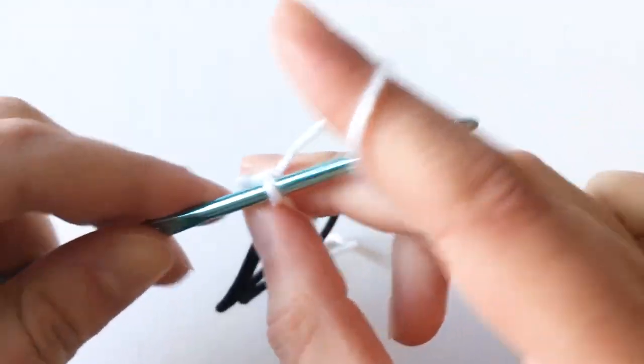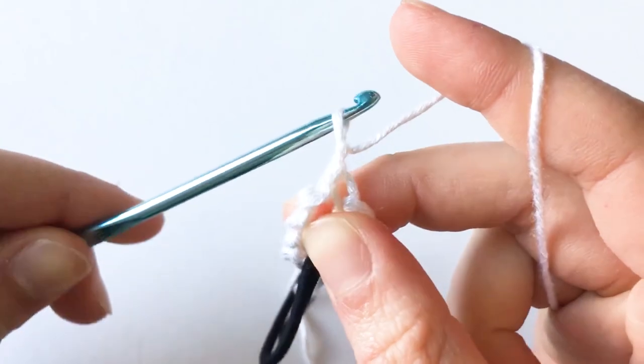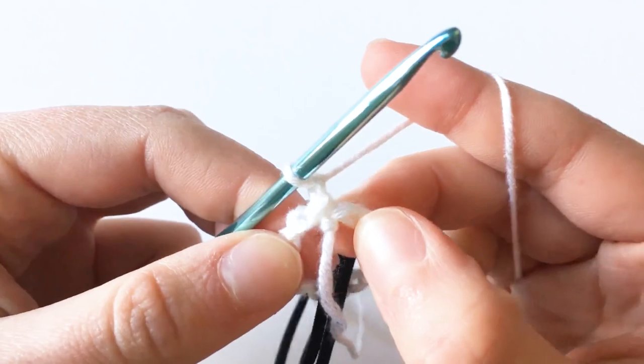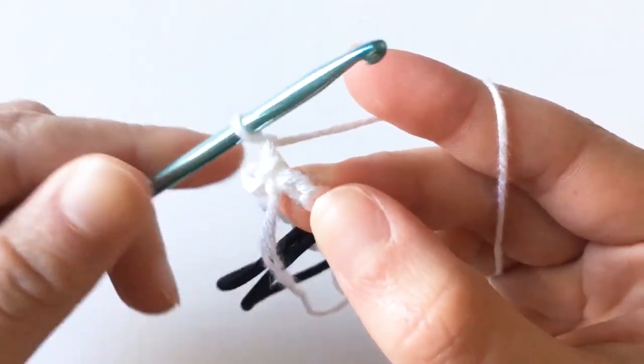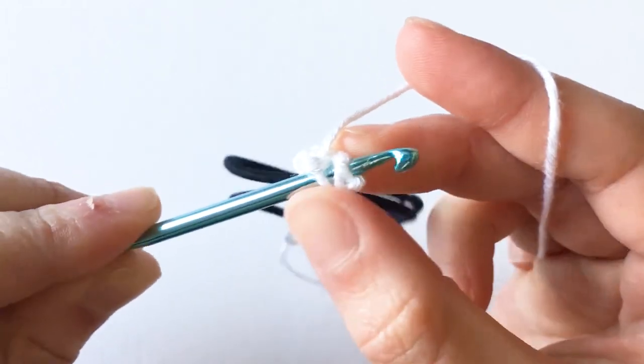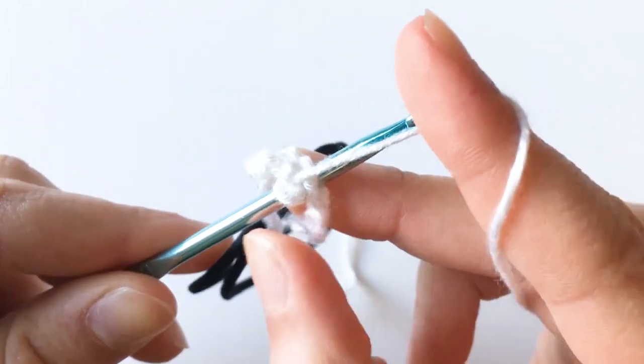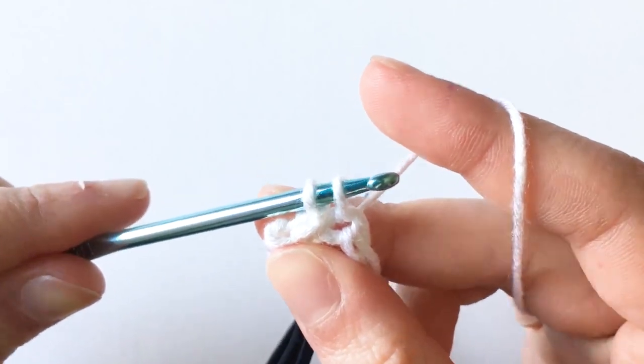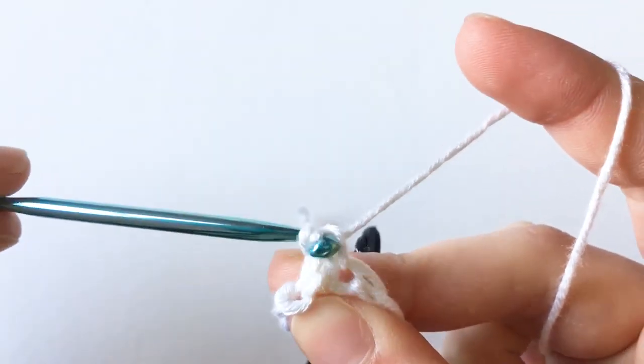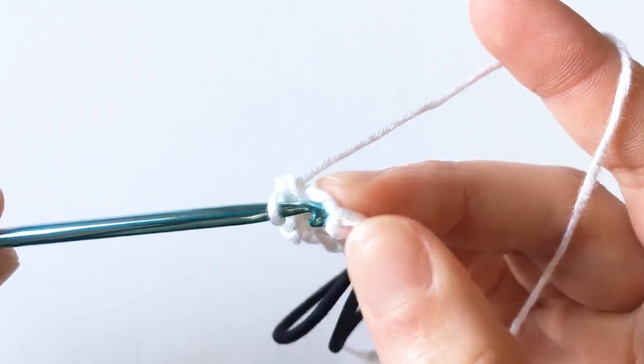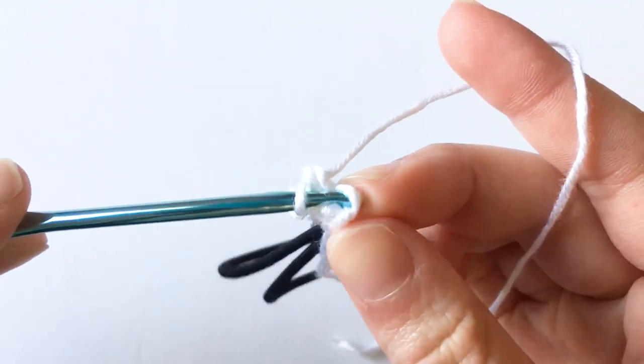Now chain one and in every chain we're going to work one single crochet. Insert your hook into that next chain, yarn over, pull back through the chain. You should have two loops on your hook. Yarn over, pull through both loops and that is your first single crochet. Continue working one single crochet in every chain around.